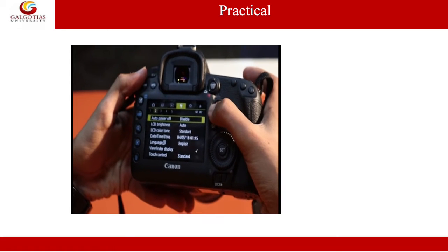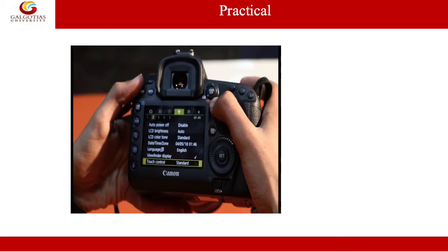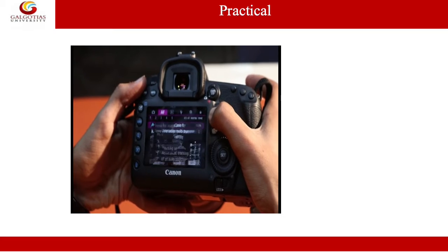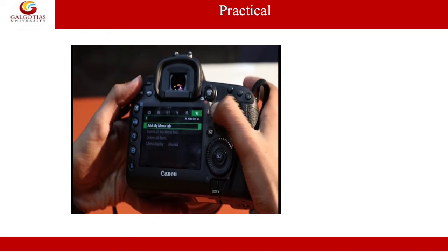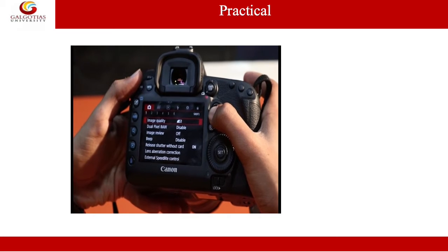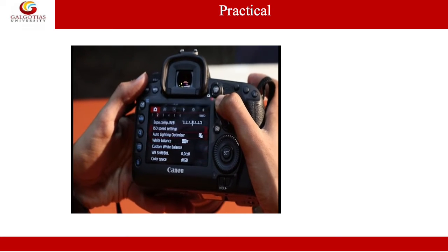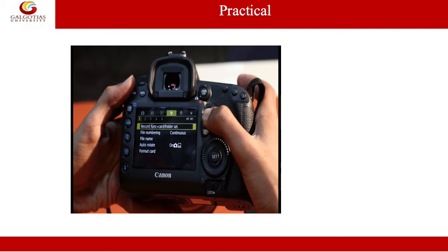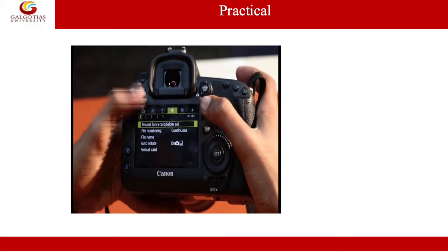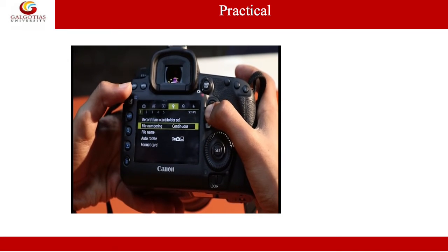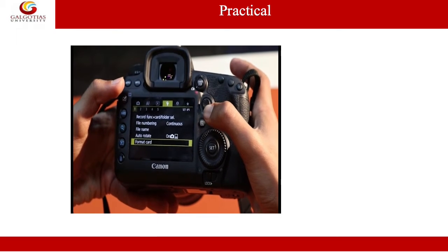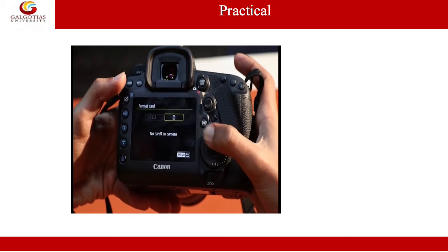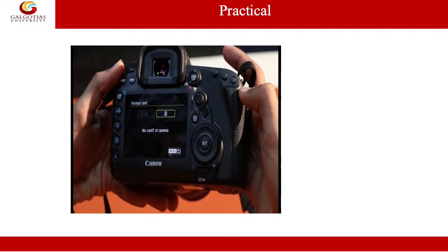Here we have a lot of buttons and functionalities. First, we have this camera setting mode where we have lots of options to set many things. We will go to the settings where we will locate our memory card and learn how to format it. In this settings tab, we have these numbers, and here it shows 'format the memory card.' You just have to press OK and it will format the memory card you have entered.